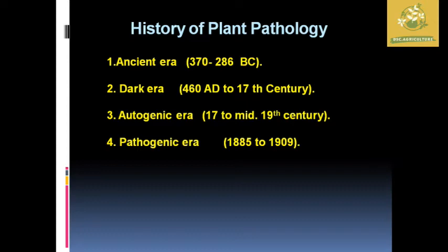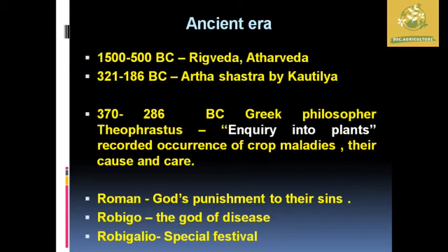The history of plant pathology is divided into different eras: the Ancient Era (around 1770 to 286 BC), the Dark Era (4th to 17th century), the Autogenic Era (17th to mid-19th century), and the Pathogenic Era, where major developments were made during the period of 1885 onwards.